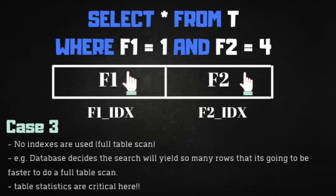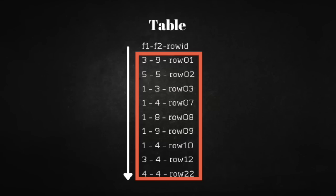Case three is when the database decides both indexes are not useful. The search for f1 = 1 AND f2 = 4 is going to return almost the whole table — say three quarters of it. So the database decides: it's not going to use either index; it will just go to the table directly and filter there, because it's much cheaper. Some databases like Postgres also use multi-threading, spinning up multiple workers to scan the table in parallel. Table statistics are very critical here.